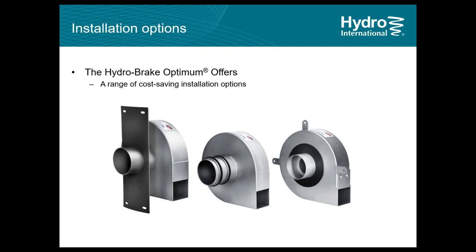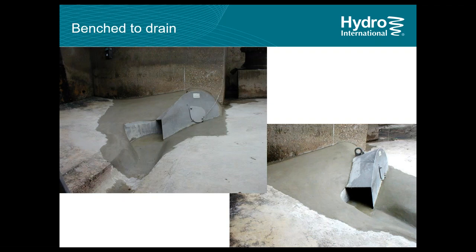The HydroBrake Optimum can be installed using a flat or curved mounting plate, or a push-fit spigot. From an installation point of view, the chamber should have concrete benching around the unit with a self-cleansing slope of about 15 percent and a low-flow channel. This allows low flows, sediment, and debris to pass straight to the HydroBrake without accumulating in the chamber. During drain-down after a rain event, debris gradually collects into the low-flow channel and is carried away, so nothing stays inside the chamber.